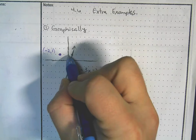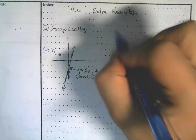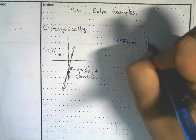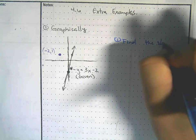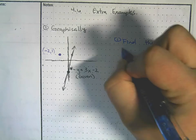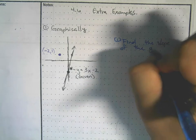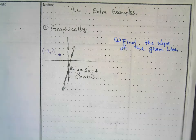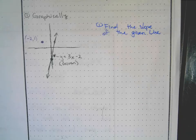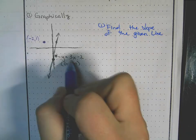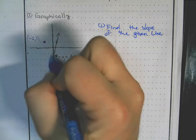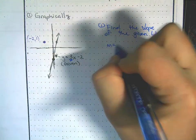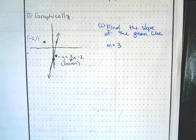Counting the rise over run: 3 over 1 is 3. I can see from the equation it's 3, and counting confirms it's 3. So now m equals 3. That's step 1 — find the slope of the given line.